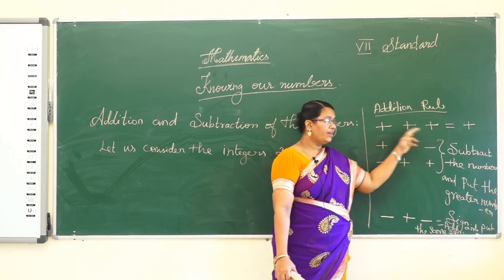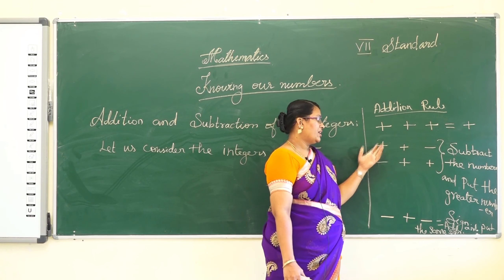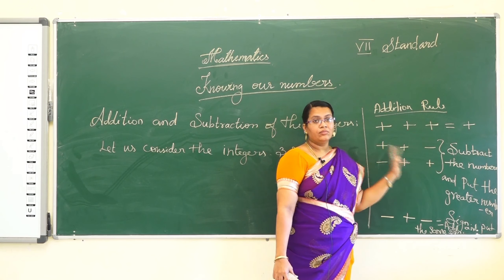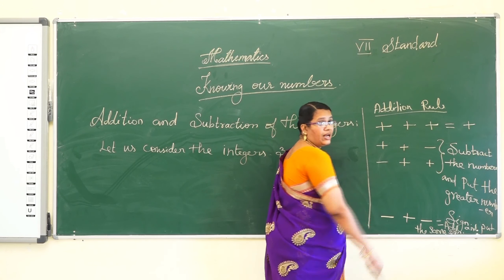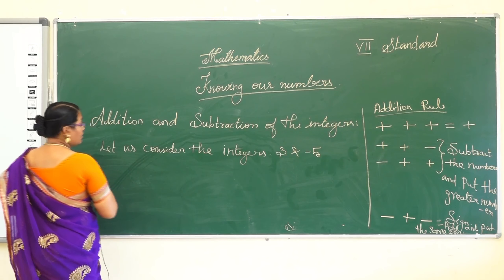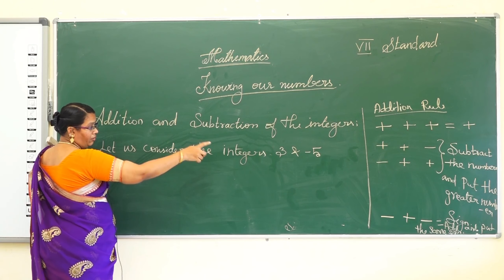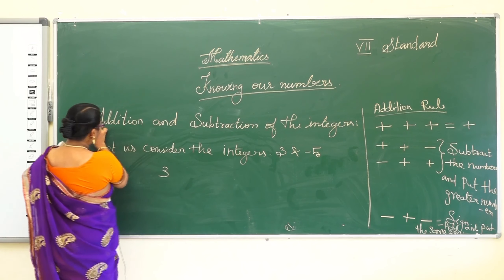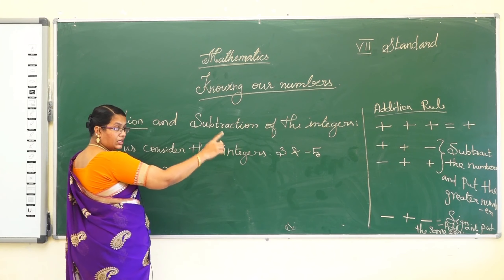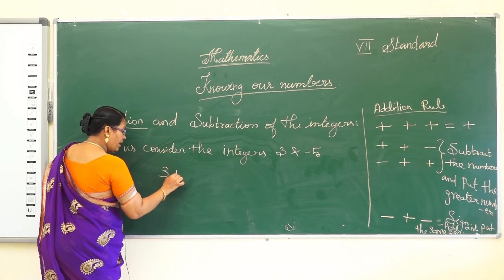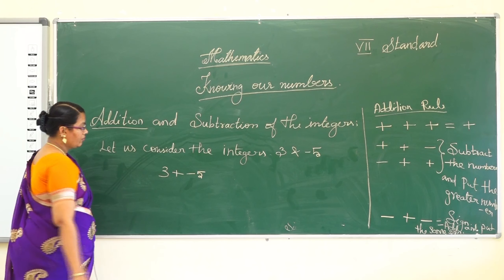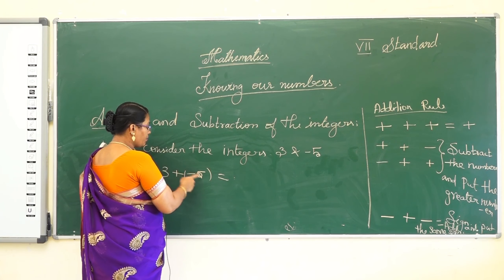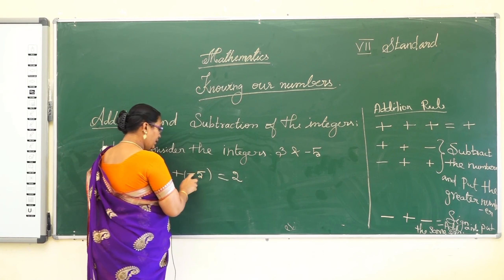So, any two positive integers we add and get a positive value. Any two different signs — plus-minus or minus-plus — we subtract first and then put the greater number's sign. Consider integers 3 and -5: 3 + (-5). Different signs, so subtract: 5 minus 3 equals 2. The greater number's sign is minus, so the answer is -2.